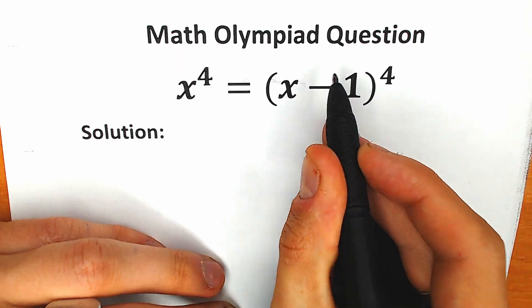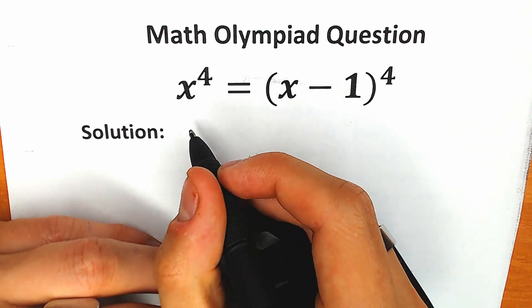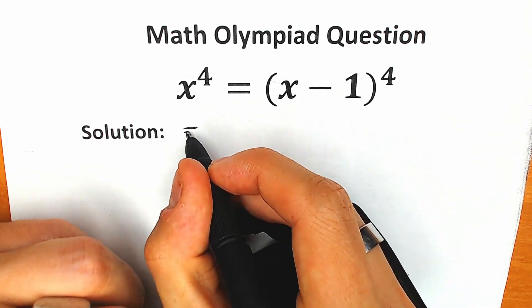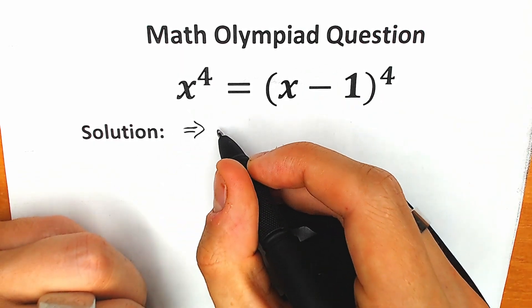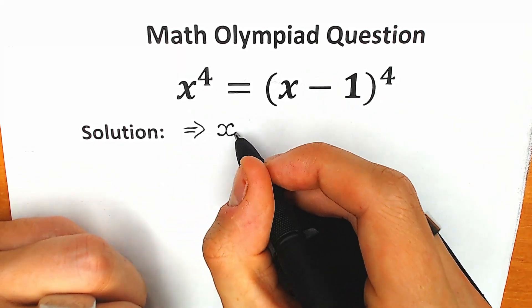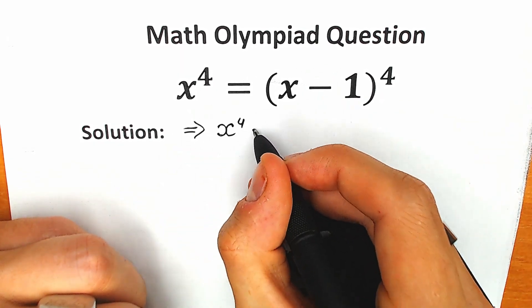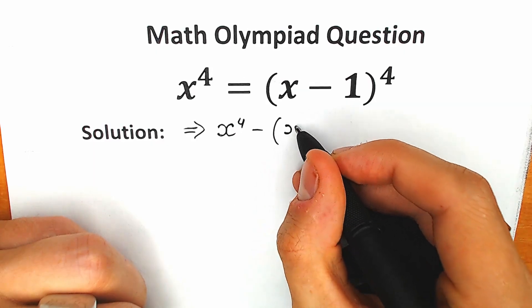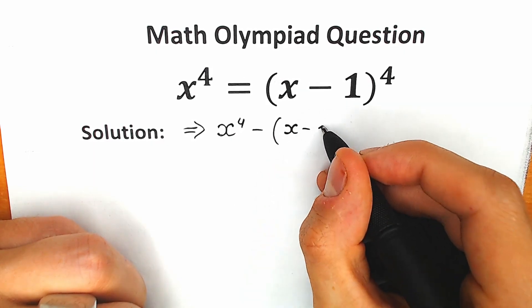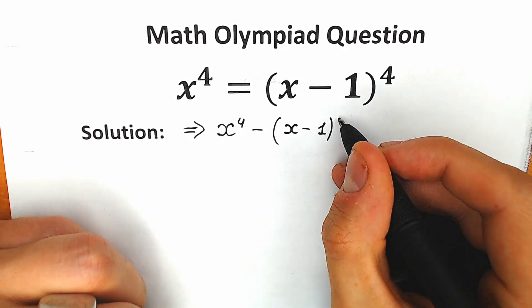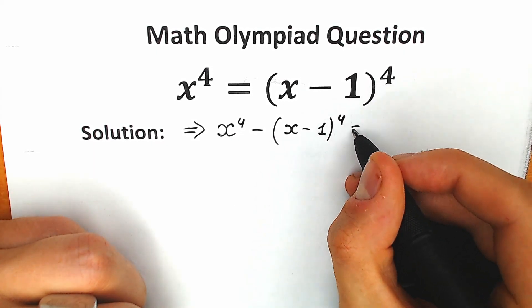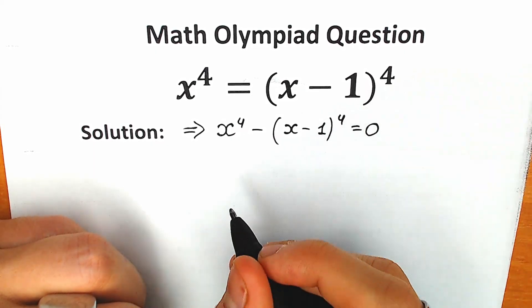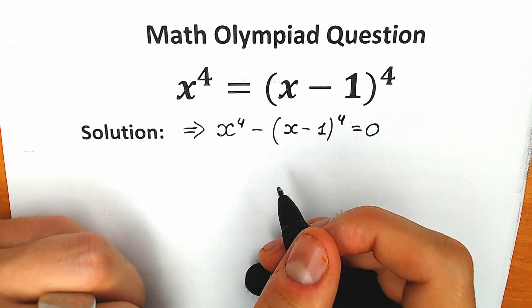First of all, I want to write this expression on the left side. This is our first step: we have x to the power 4 minus x minus 1 to the power 4, equal to 0.